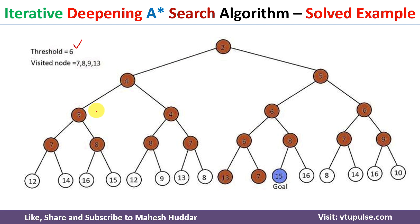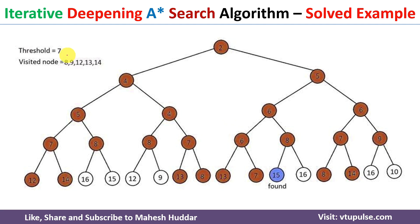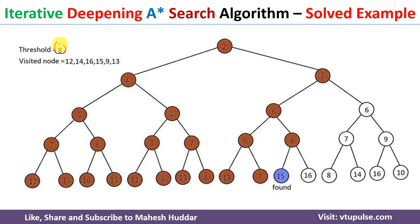Applying the same process with threshold = 6, we still do not reach the goal node. We explore all reachable nodes but none of them is the goal node and all unexplored nodes exceed the threshold. The minimum among the pruned nodes is 7, so the next threshold becomes 7. With threshold = 7 we also cannot reach the goal node, so the next threshold becomes 8.